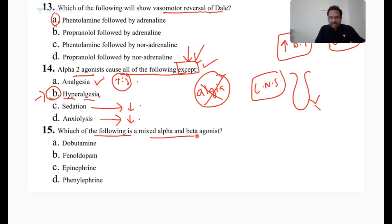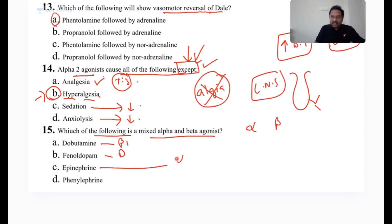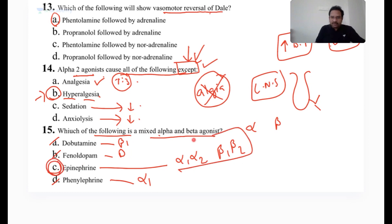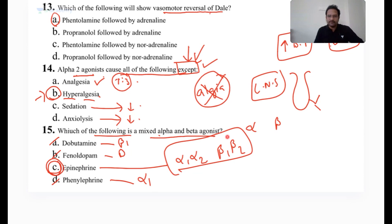Which of the following is a mixed alpha and beta agonist? Both alpha action and beta action must be present. Dopamine has only beta-1 action. Fenoldopam is a dopamine agonist. Phenoxybenzamine acts only at alpha-1. All three are selective agents. The mixed agent is epinephrine — it acts on alpha-1, alpha-2, beta-1, and beta-2. These are concept-based questions; you need to go through them again and again to understand them well.